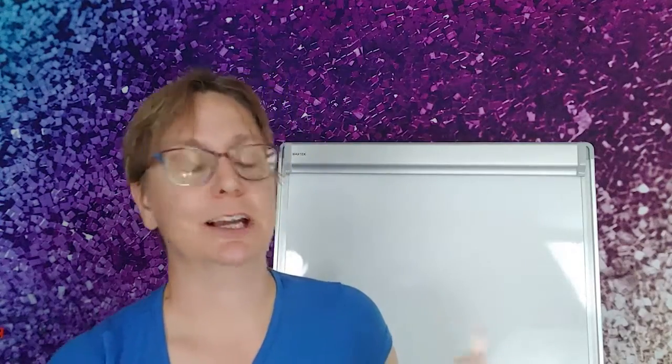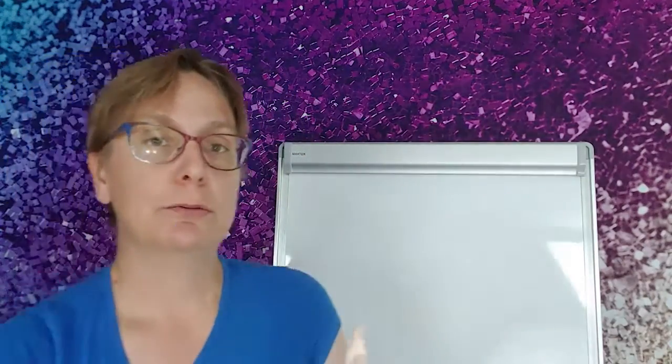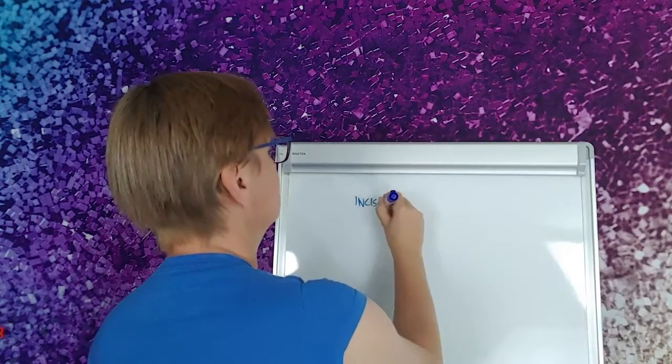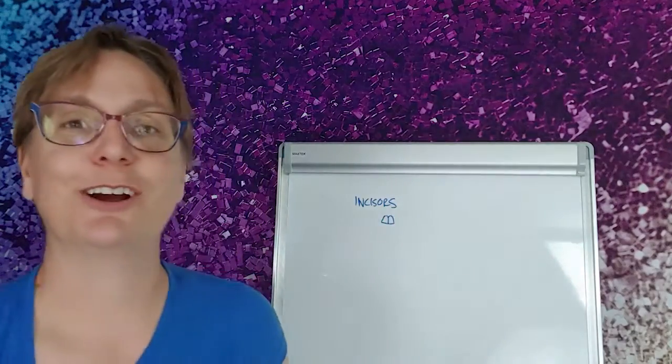Mammal teeth come in four different kinds. We have our incisors. They're our little nippy teeth, our big ones in the front. Those are the bitey ones, those are our incisors.